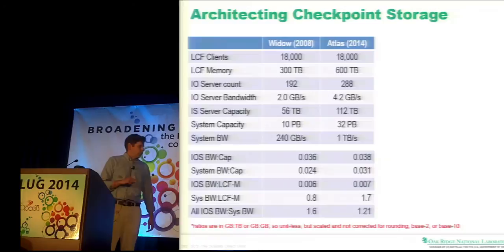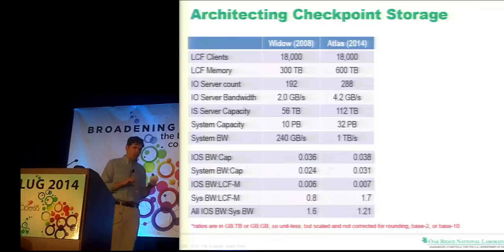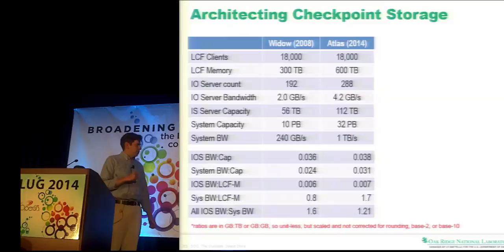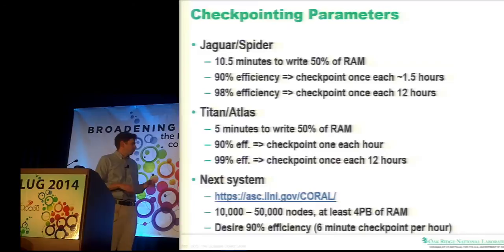I tried to calculate some ratios to project into the future. The two I'll use are: IO server bandwidth to capacity — that seems to be holding constant, though shingling and alternative media may drive those differently — and the storage system overhead, which was roughly 60% for aggregating services for Widow and 21% for Atlas. That improvement explains a lot of the speedup from the 3x increase in capacity and 4x increase in performance.